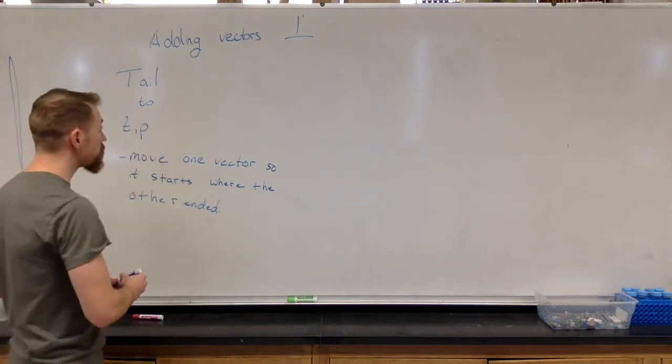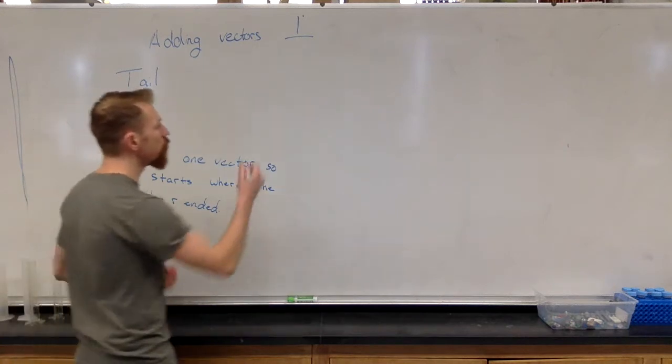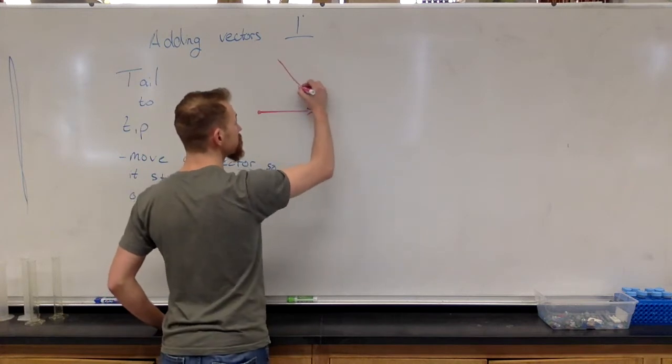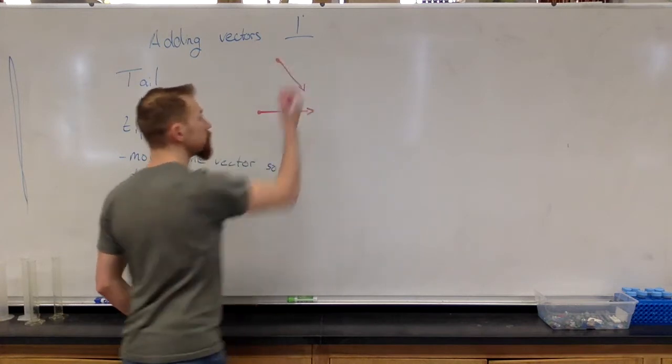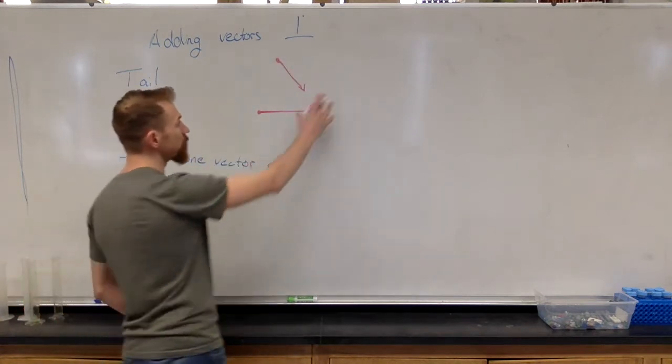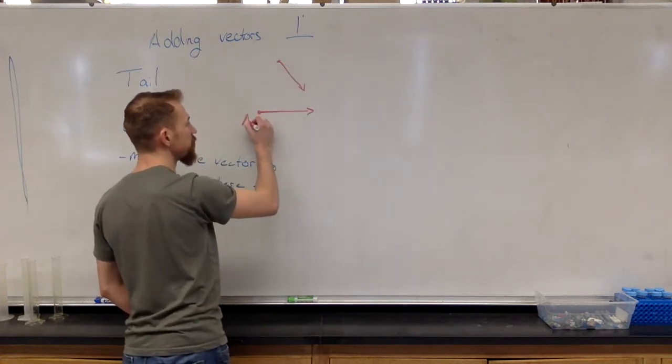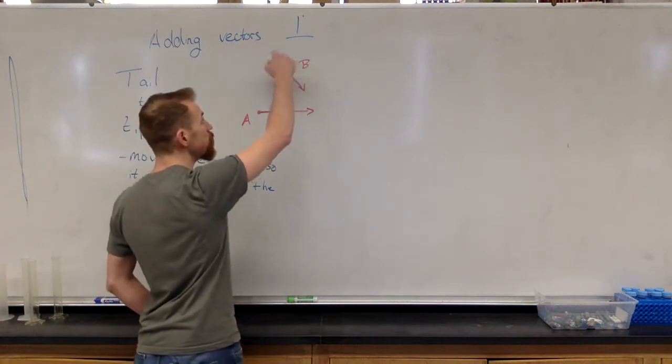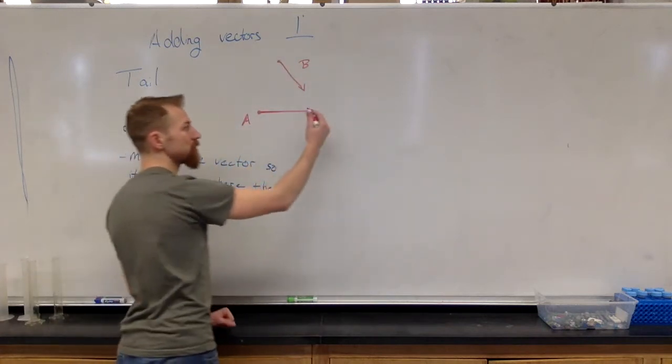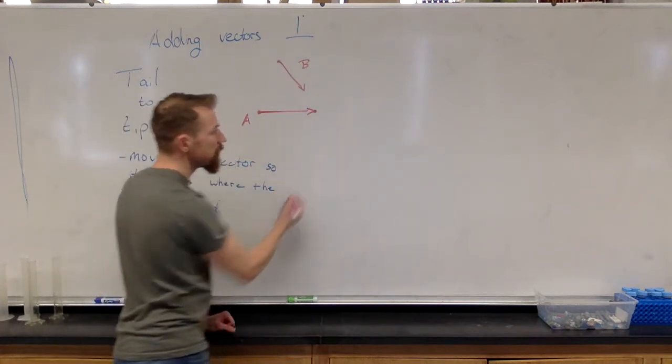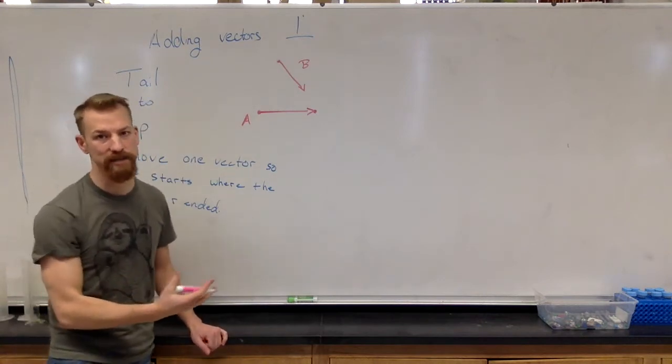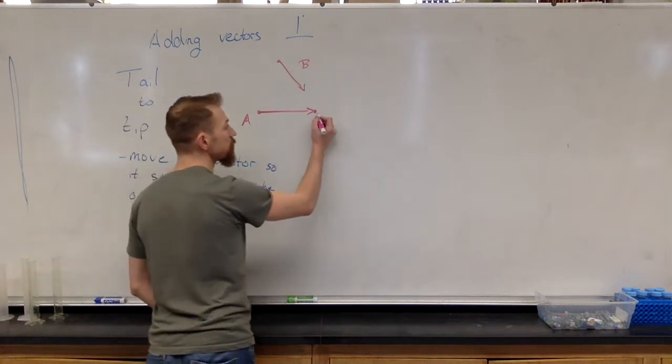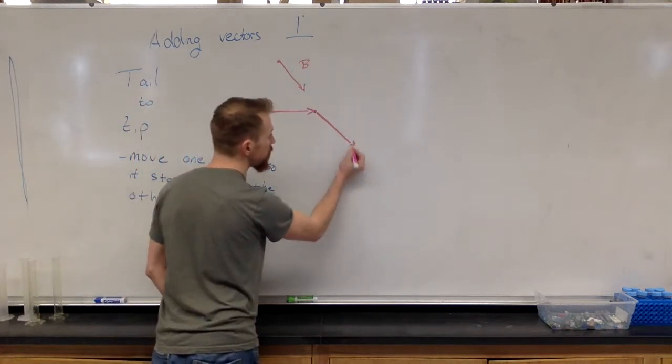So for example, if I have two vectors, one going in this direction and another going in this direction, then to add them together, we'll call this vector A and this vector B. What I would do is I would take vector B, move its tail to the tip of vector A and the direction has to stay the same and the magnitude has to stay the same. So I move vector B to vector A.